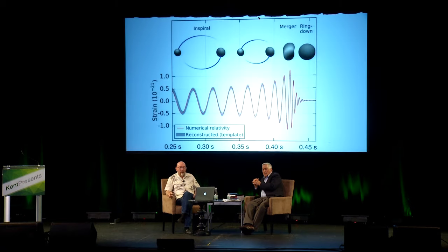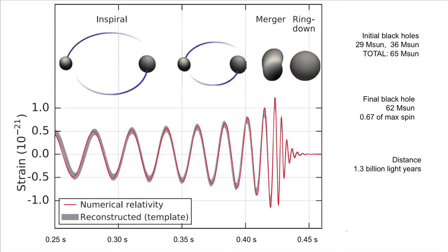When you clean the signal up, you get the gray line — fuzzy because that's the noise after cleaning — and the little red thing is from a computer simulation. You compare with a computer simulation in order to figure out what was the source. That beautiful comparison between the two tells us this was two black holes spiraling around each other, merging, colliding. That tells us the masses of the black holes were 29 and 36 times the mass of the sun, and three solar masses of energy were lost in gravitational waves.